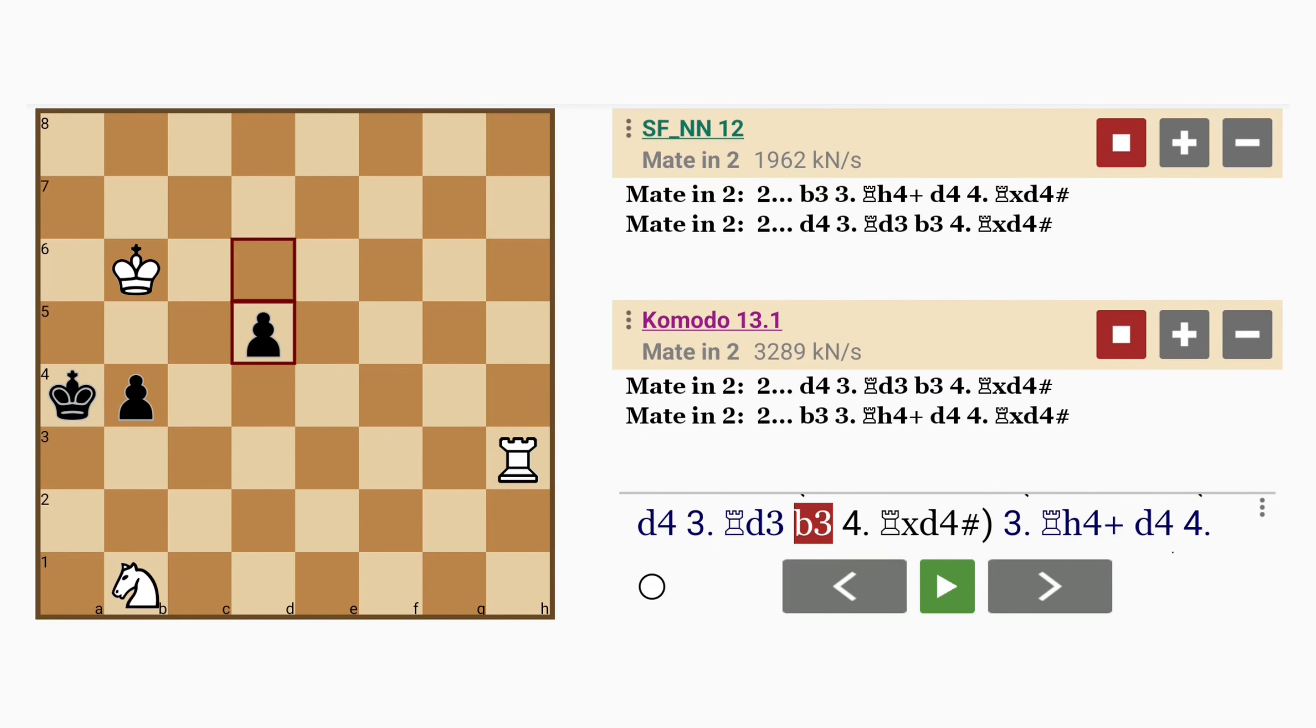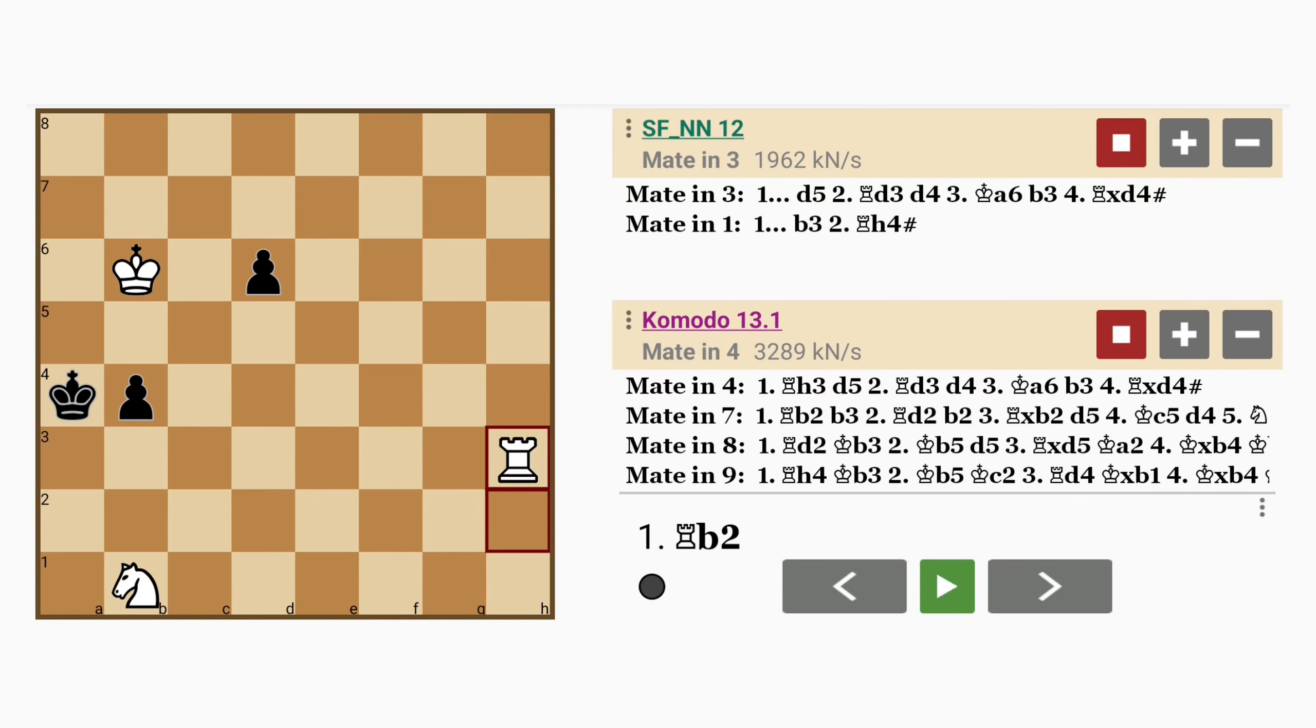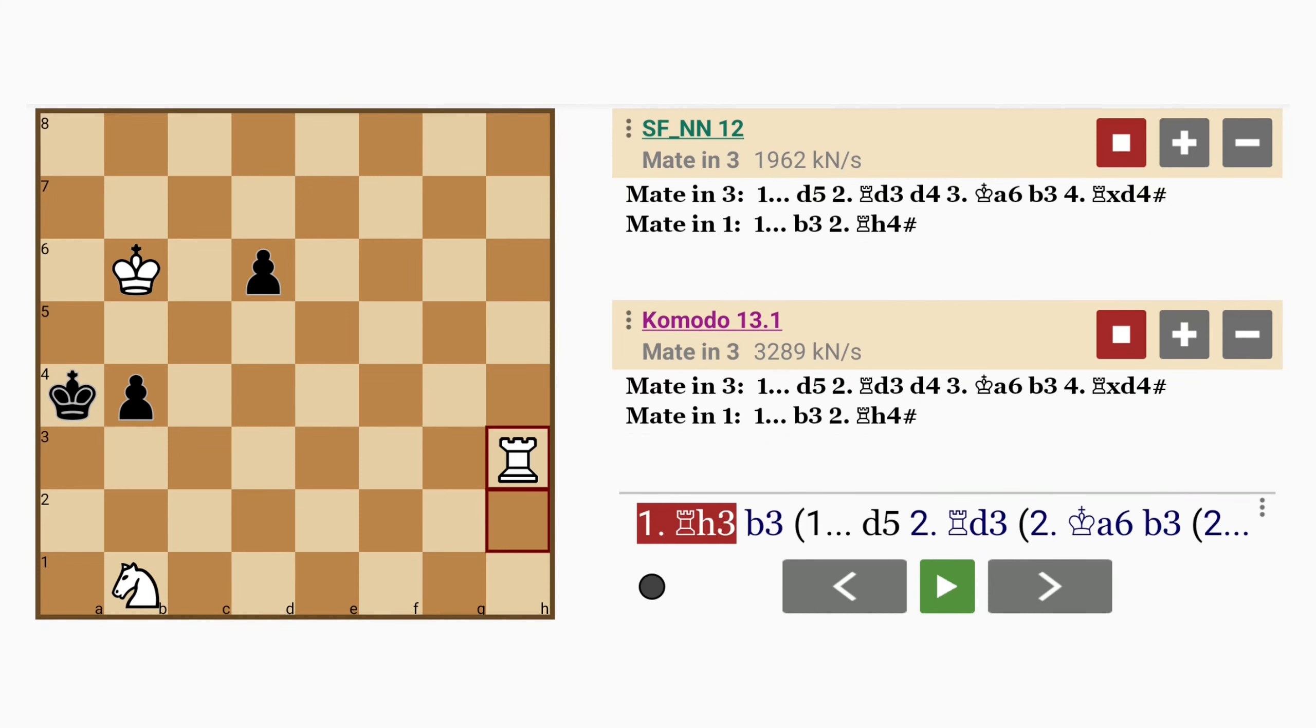Looking back at this original position, would you have spotted that? Would you have realized that the knight on b1 need not move anywhere, and all that white had to play to win in the fastest way, is rook to h3? If so, you're probably a better player than you think.